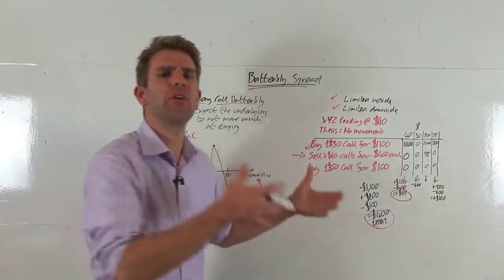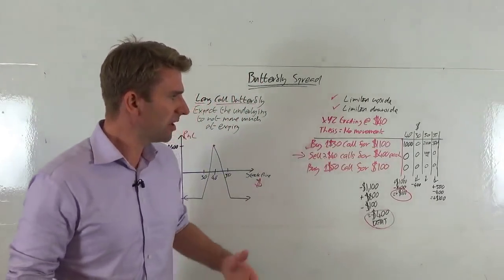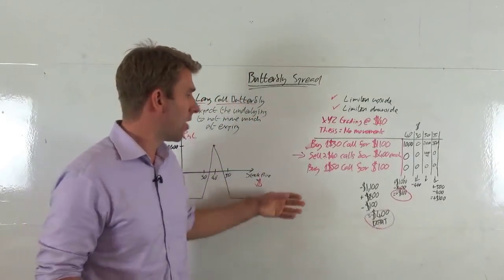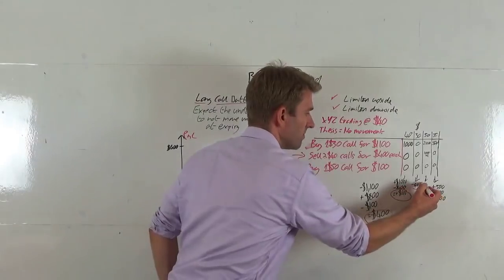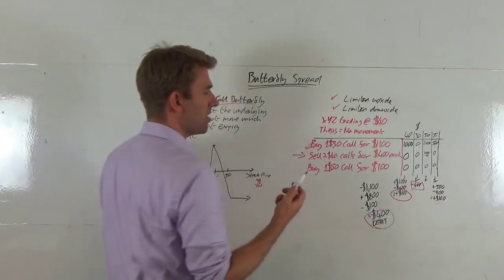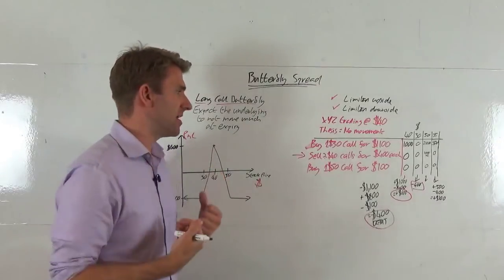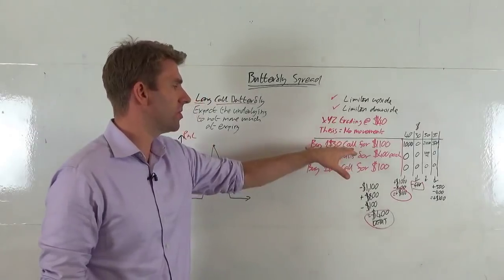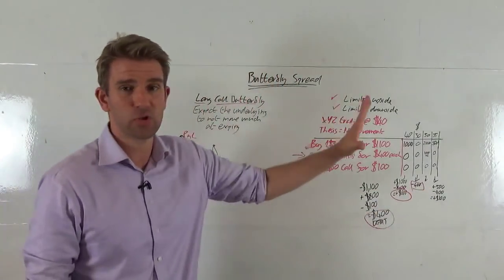What if it expires at $30? The $30 call is worth nothing — the right to buy something at its current price is worthless. The $40 calls are also worthless, and the $50 call is worthless. Everything expires worthless, so we've just lost the $400 we paid to enter the trade. No matter how low the stock goes below $30, it never gets any worse than that — options can't be worth less than zero. So the maximum loss is $400.